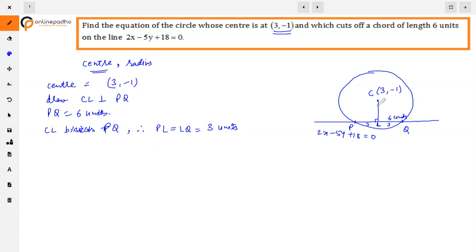So distance of C from PQ, which is CL, we will find. Now, if we have given a line Ax + By + C = 0 and a point is (x1, y1), how can we find the distance? We will substitute this line: Ax1 + By1 + C upon the square root of A² + B². This is our distance formula.